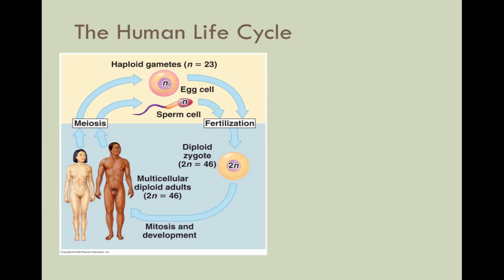The human life cycle may begin at the multicellular diploid adult level. With the use of meiosis, haploid gametes are made in the gonads. The haploid cells then recombine in a process known as fertilization to make a diploid zygote. Mitosis and development will give rise to a new human adult and the cycle will continue.